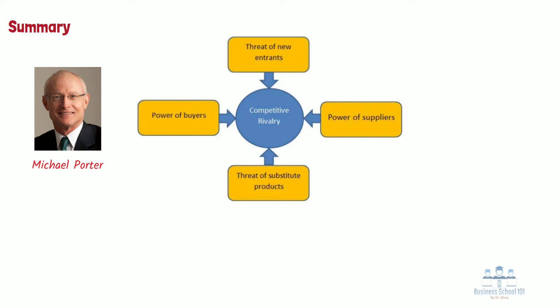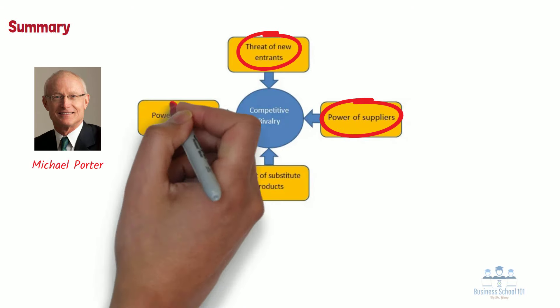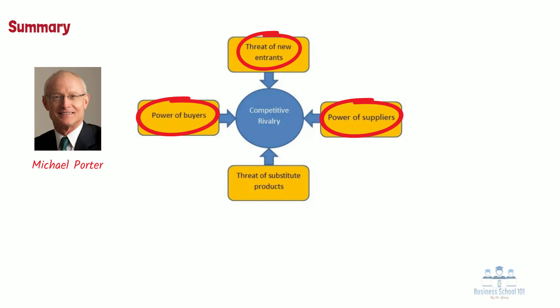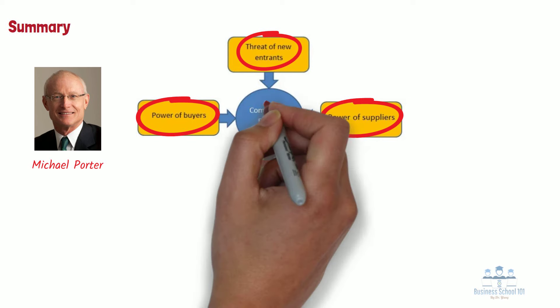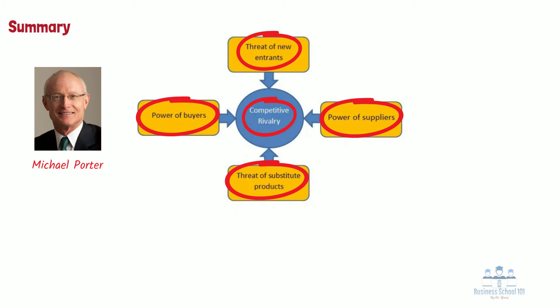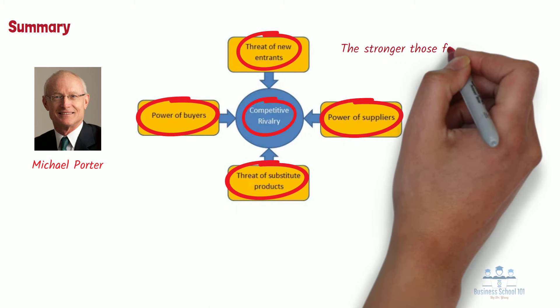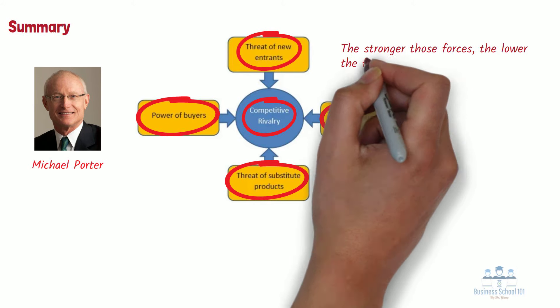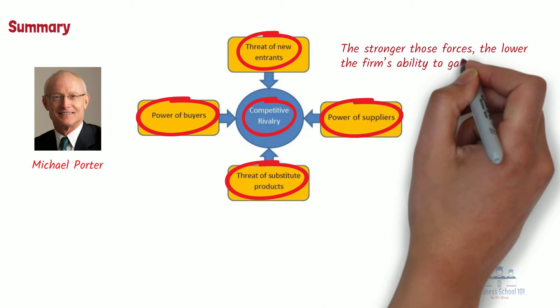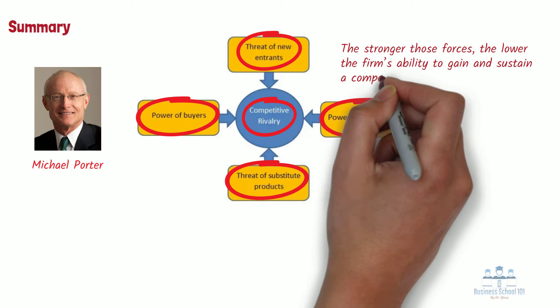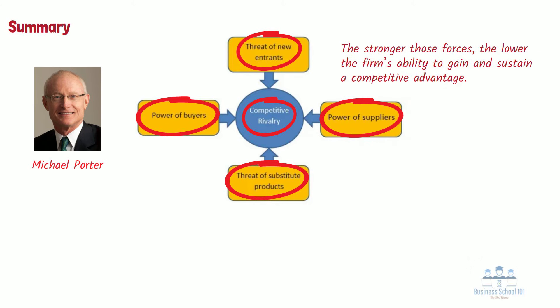These five forces are threat of entry, power of suppliers, power of buyers, threat of substitutes, and rivalry among existing firms. Generally, the stronger those forces, the lower the firm's ability to gain and sustain competitive advantage.